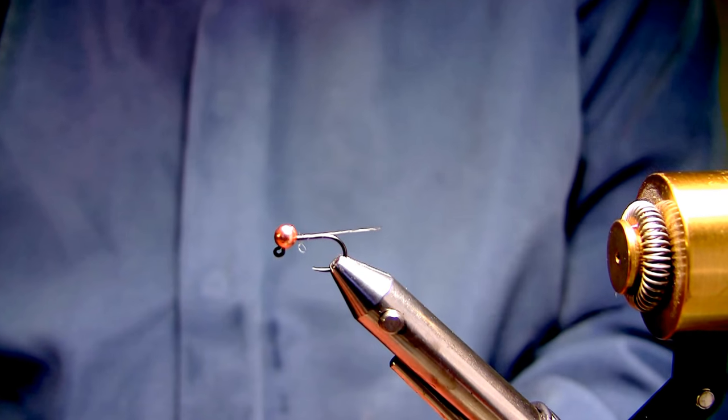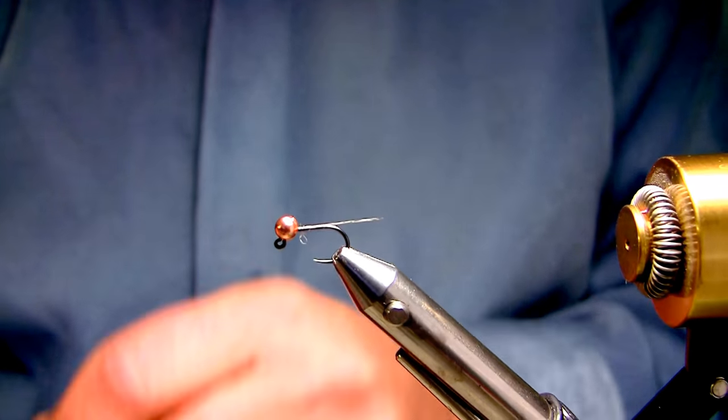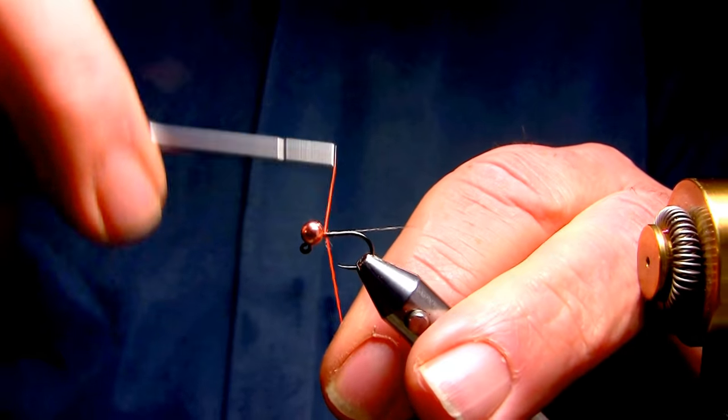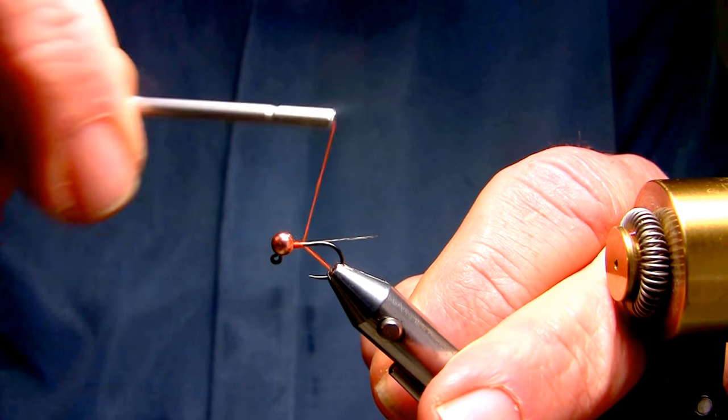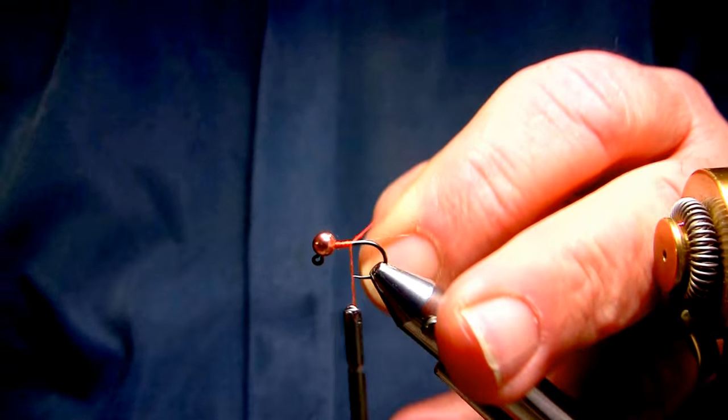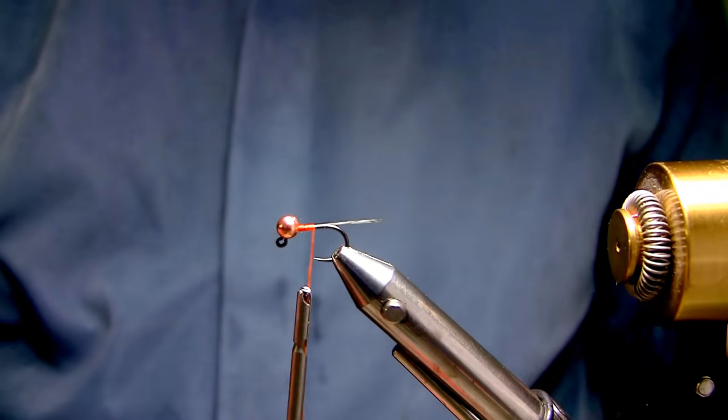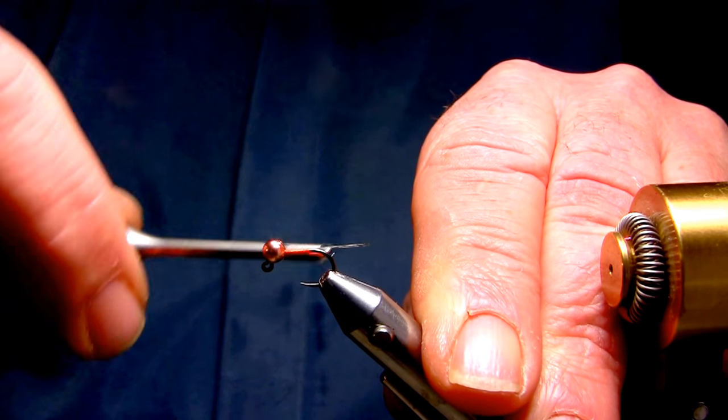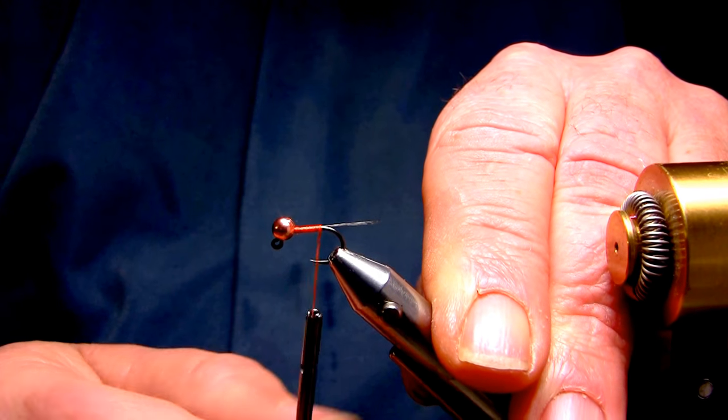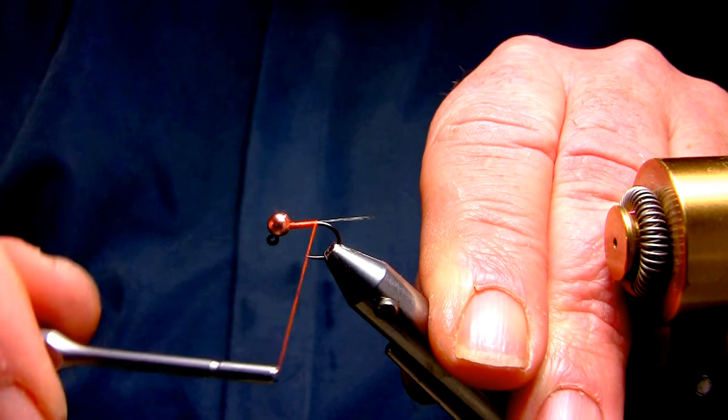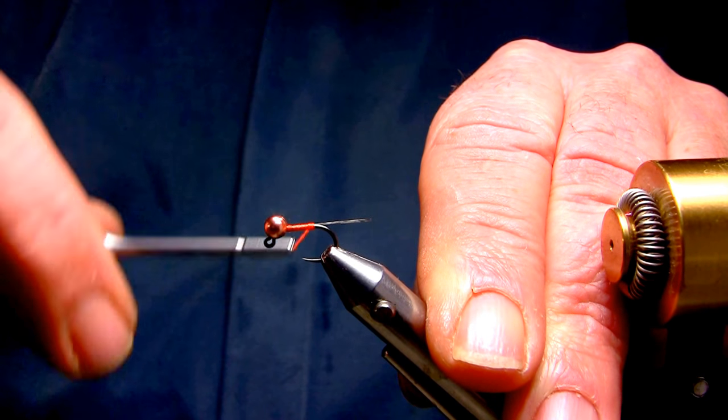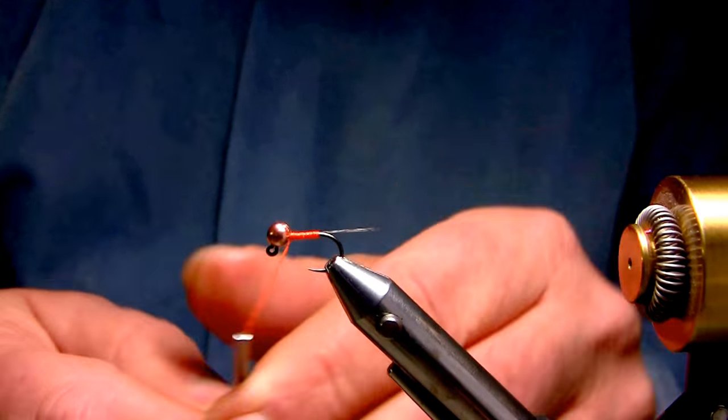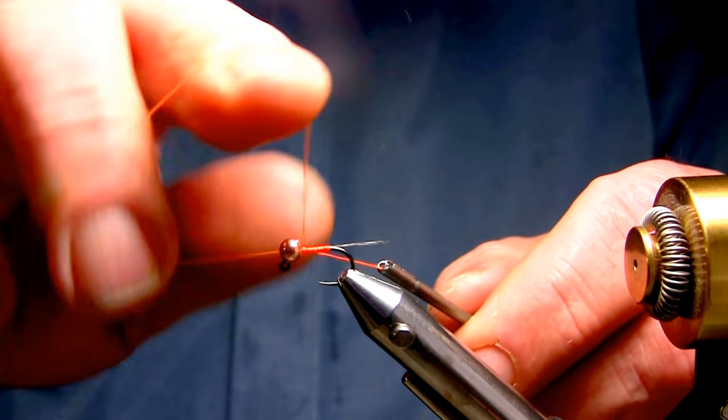And now we'll run the Protagon buzzer body in the fluorescent orange. We'll start that behind the bead as well. Remove the tag. Build our first layer. Make sure, again, keeping everything flat by untwisting it. And here we'll lay in a whip finish.